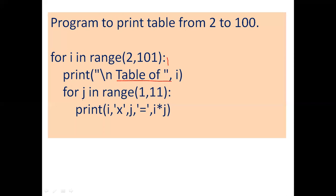Here we have taken the inner loop: for J in range of 1 to 11. So J will be assigned values 1 to 10, because 11 minus 1 is 10. In the body we have a print statement: print I, multiplication sign, J, equal to I into J. So when I is 2 and J is 1, it prints 2 x 1 = 2.